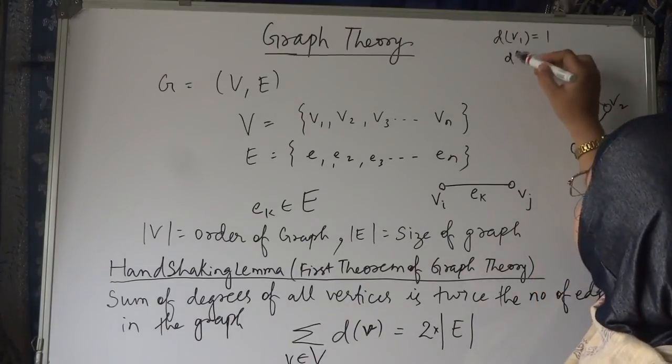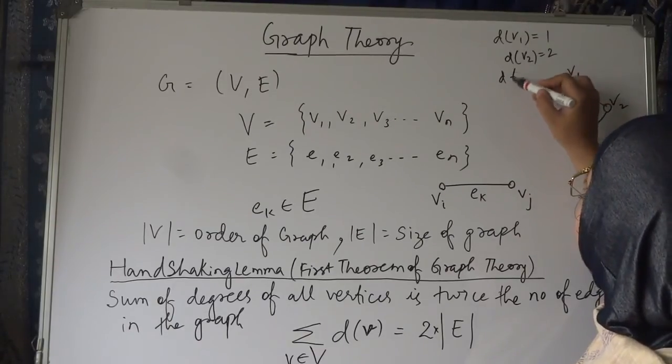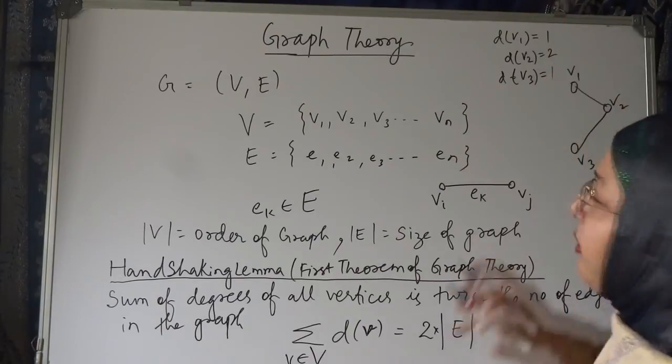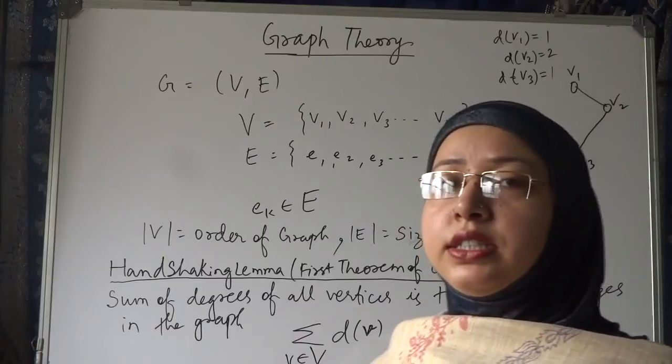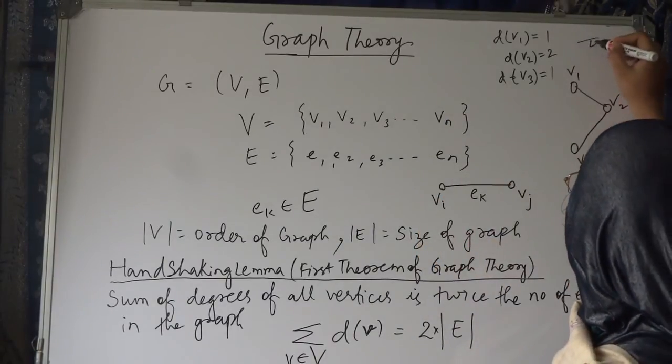Degree of v1 is 1, degree of v2 is 2, degree of v3 is 1. Sum of this—what will be the sum of these degrees? 2, 3, 4. This is equal to 4.